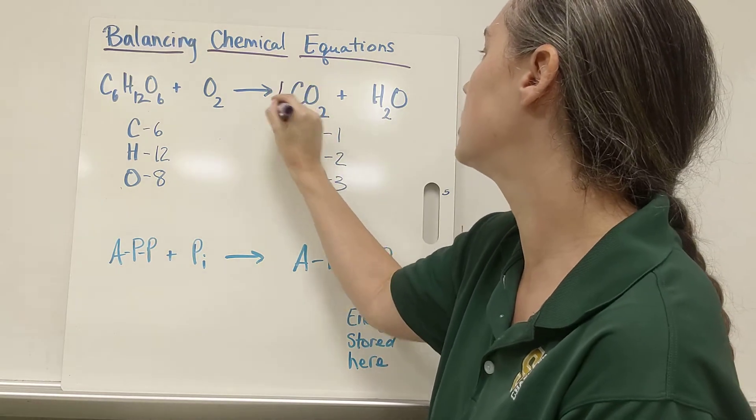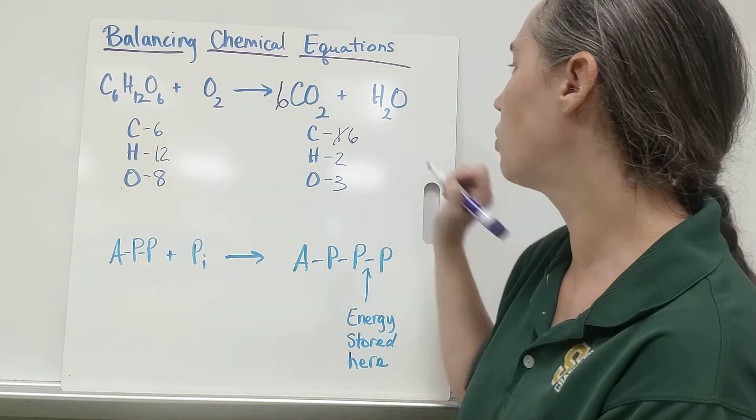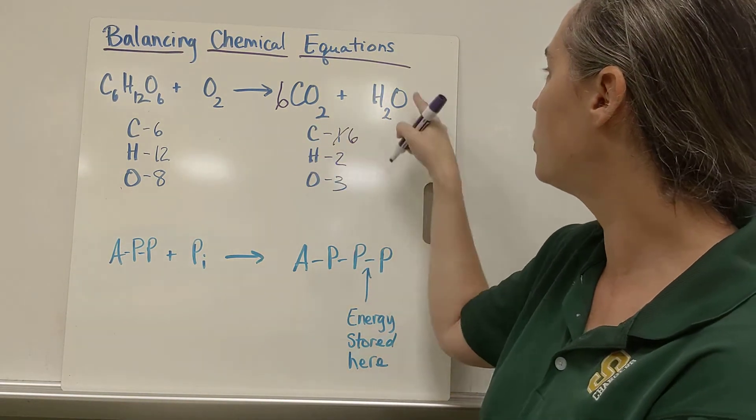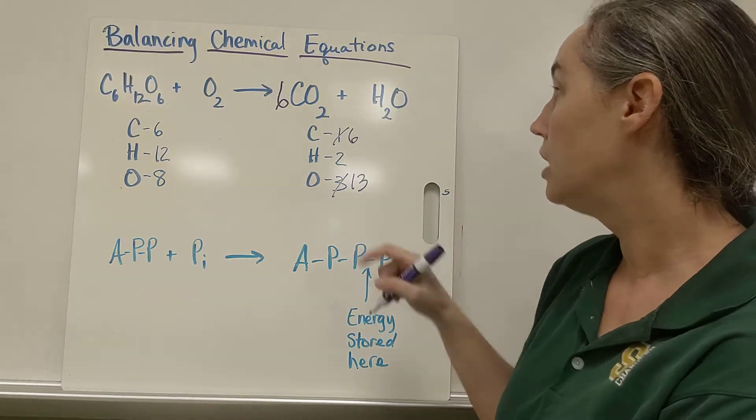So let's look together. We can start off, if I have six carbons here, I could put a six in front of CO2, so now I have six carbons, not one. Let's recount. And then my oxygens, six times two is twelve, plus one, instead of three I now have thirteen. So my carbons are balanced, but my hydrogens and oxygens aren't.